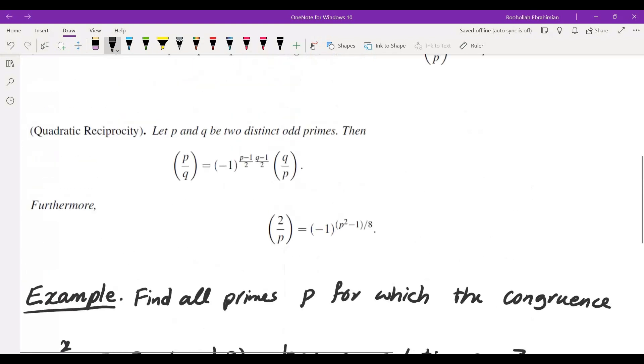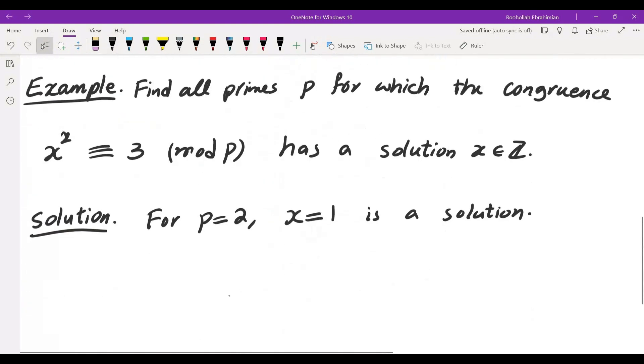Now since P and Q are distinct, I will have to check P equals 3 also separately. For P equals 3, X equals 0 is a solution because 0 squared is in fact 3 mod 3.